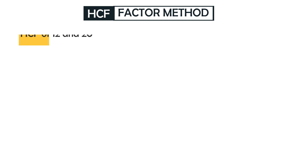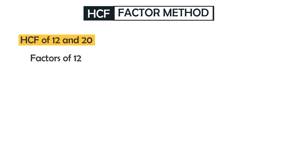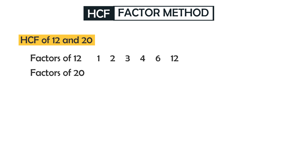The first method is the factor method. Let's learn how to find HCF of 12 and 20 using the factor method. What are the factors of 12 — the numbers that divide 12 without a remainder? They are 1, 2, 3, 4, 6, and 12. What are the factors of 20? They are 1, 2, 4, 5, 10, and 20. The common factors of 12 and 20 are 1, 2, and 4.